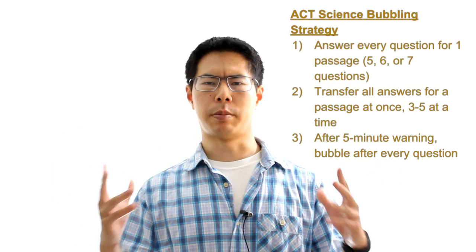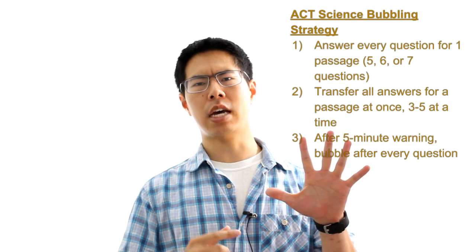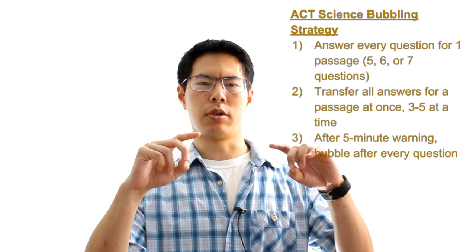For the ACT science test, we recommend the following strategy for bubbling. First, answer every question for a particular passage before bubbling, which will be either five, six, or seven questions. Just circle your answers in your test booklet. Even if you skip some questions while working through the passage, make sure every question is eventually answered before you transition to bubbling in your answers.